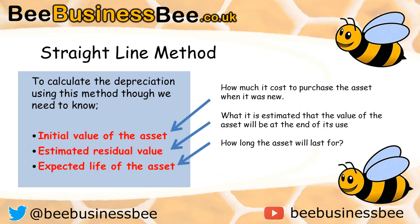We may use some information that's in the media — for example, a trade magazine — which tells us what other people are selling that item for, to get that residual value. And we also need to know the expected life of the asset, so how long do we expect that asset to actually last for?